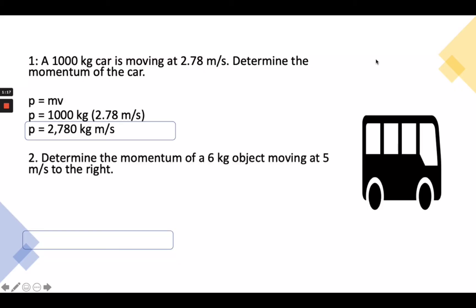For our next problem, we determine the momentum of a 6 kilogram object moving at 5 meters per second to the right. Again, our formula is momentum equals mass times velocity. We have 6 kilograms and 5 meters per second to the right. We simply substitute and multiply, and our momentum is 30 kilogram meters per second to the right. We need to include the direction to the right because momentum is a vector quantity. A vector quantity means it's direction specific, so we need to indicate the direction.